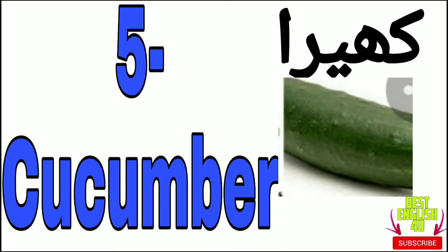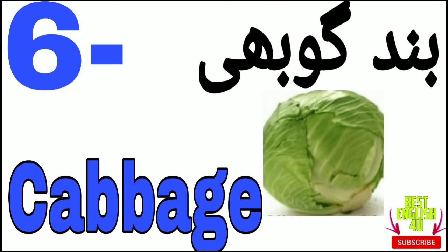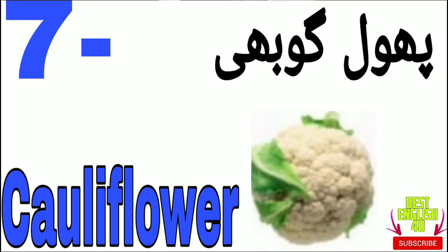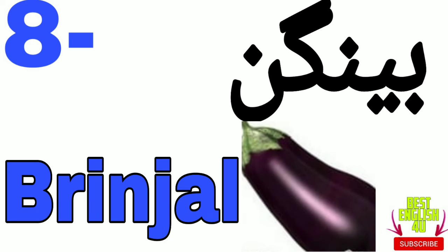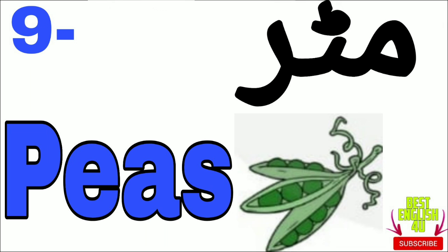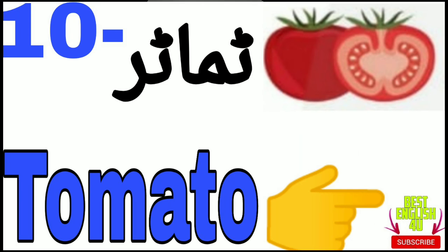Cucumber — kheera. Next is cabbage — patta gobi. Next is cauliflower — phool gobi. Next is brinjal — baingan. Second last is peas — mutter. And the last is tomato — tamatar.